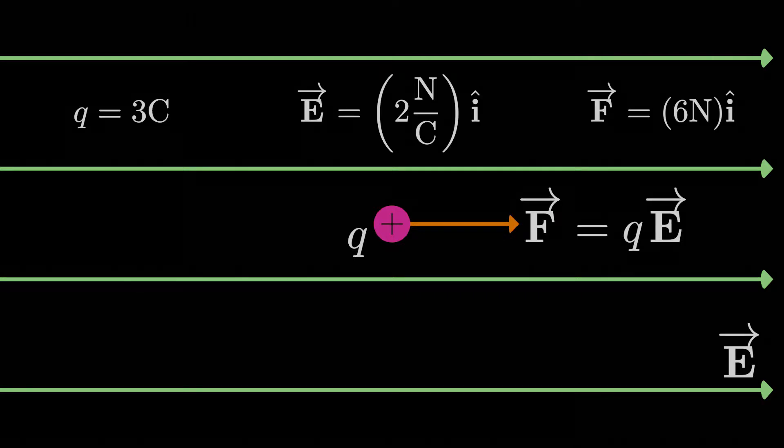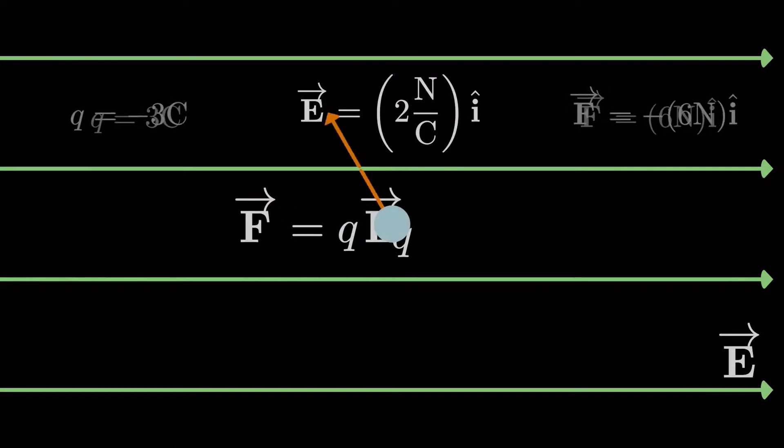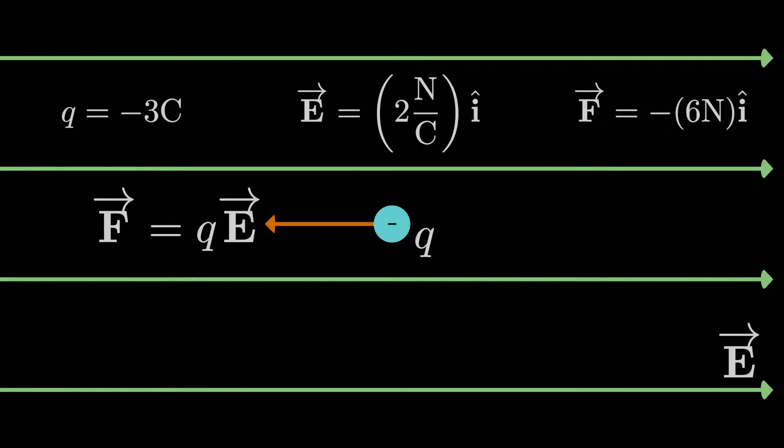Remember, if Q is negative, our definition here QE takes care of that by flipping the sign of the force vector automatically so it points in the opposite direction.